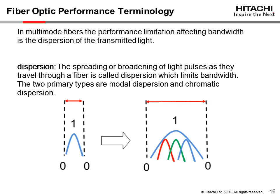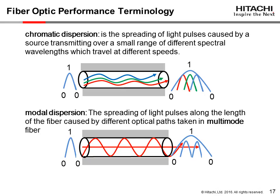In multimode fibers, the performance limitation affecting bandwidth is the dispersion of the transmitted light. Dispersion is the spreading or broadening of light pulses as the light modes travel through the fiber. There are two primary types of dispersion: chromatic and modal. Chromatic dispersion, depicted in the top graphic, is the spreading of light pulses caused by a light source, like a VCSEL, transmitting over a small range of different spectral wavelengths which travel at different speeds. For example, a light source may be optimized at 850 nanometers but has a spectral width range of 840 nanometers to 860 nanometers. Although the signal originated at a specific moment in time, the different wavelengths of 840, 850, and 860 — all carrying the same digital one signal — will arrive at the receiver at slightly different times, which broadens the pulse. Too much chromatic dispersion can result in transmission failures.